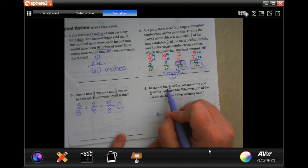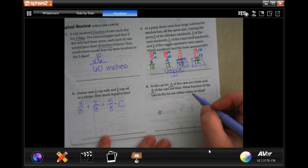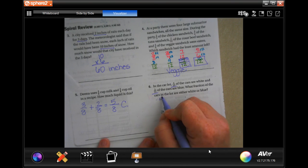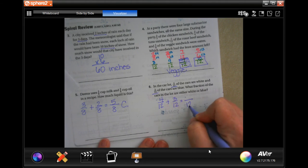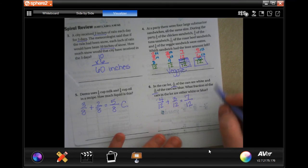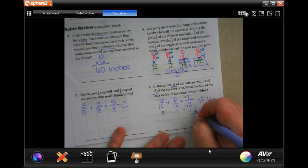In a car lot, 4/12 of the cars are white, and 3/12 of the cars are blue. Which fraction of the cars in the lot are either white or blue? 4/12 plus 3/12. Denominator stays the same. And 4 plus 3 is 7/12 of the cars.